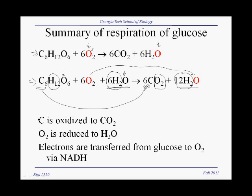So in summary, what's happening in terms of respiration of glucose is that all the carbon atoms are oxidized to carbon dioxide. The gaseous molecular oxygen is reduced — meaning it accepts electrons — to become water molecules. And the electrons are transferred from glucose to oxygen via an electron shuttle called NADH, and they are transported in the form of hydrogens.